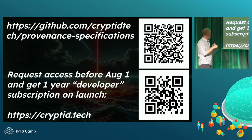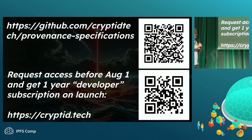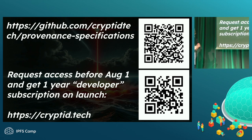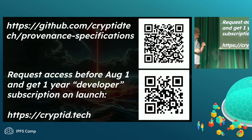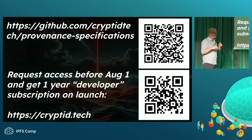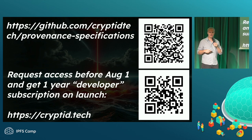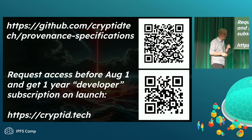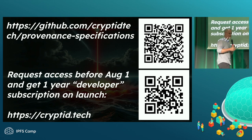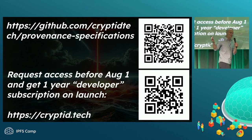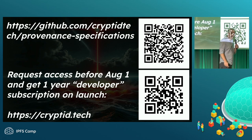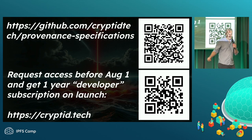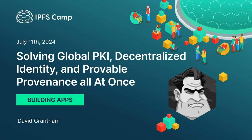Twenty percent of the licensing revenue goes straight into a community chest that will fund grants for anyone who wants to build using these specs. The rest maintains the infrastructure, fixes bugs, and drives improvements. If you sign up before August 1st, we'll give you the developer tier — a lot more provenance logs and updates — for free for the first year. Thank you.